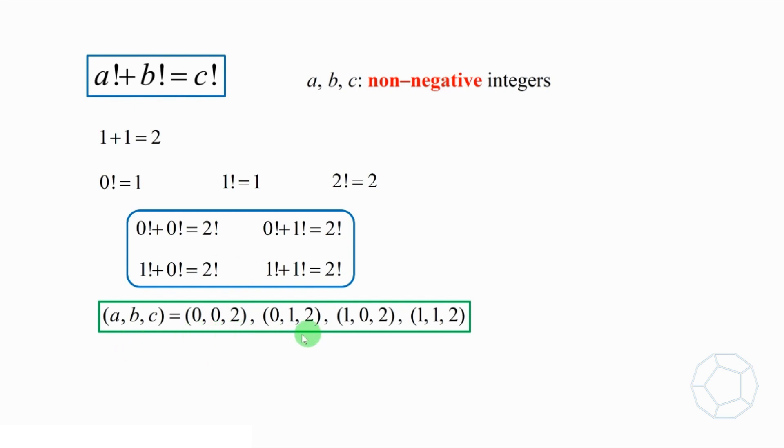(a, b, c) equals (0, 0, 2), (0, 1, 2), (1, 0, 2), and (1, 1, 2). Here, a and b are either 0 or 1. What about the cases where a and b are both larger than or equal to 2? Are there any solutions?